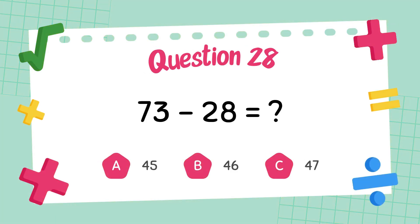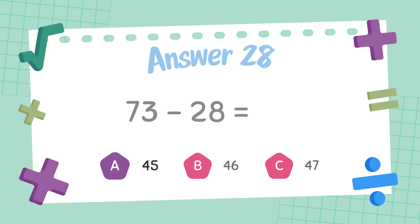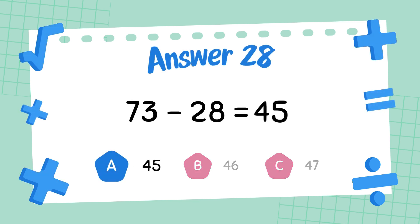What is seventy-three minus twenty-eight? The answer is forty-five.